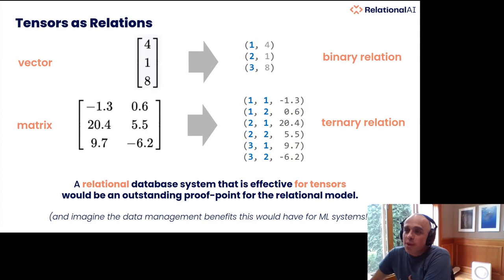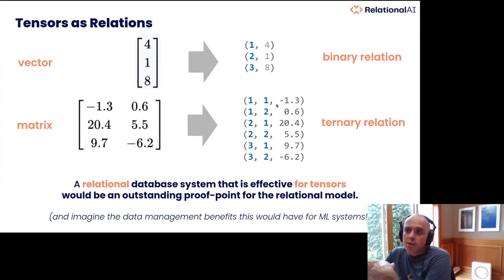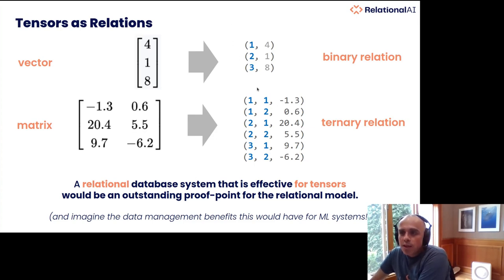Vectors can also be modeled as relations — the first argument is the index (1, 2, 3) and the second is the value. Similarly, matrices are ternary relations with two indexes. This really highlights that the relational model is very universal — you can virtually model anything in it. The challenge is that it doesn't need to be efficiently implemented in this form; the logic is not necessarily the problem, the implementation might be.